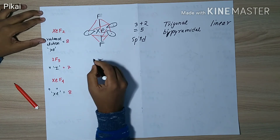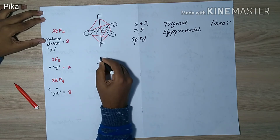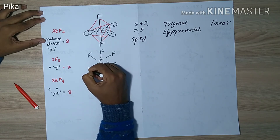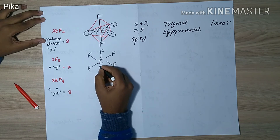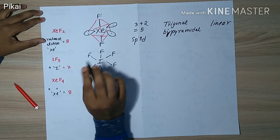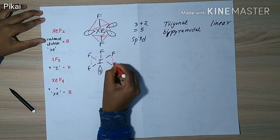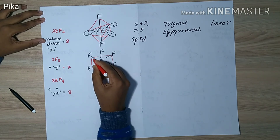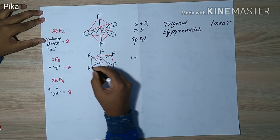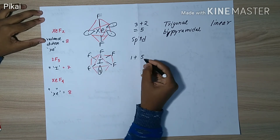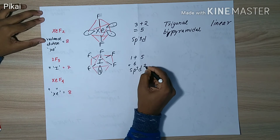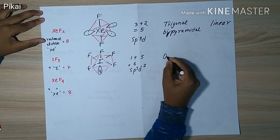For IF₅, iodine is the central atom with seven valence electrons. Iodine shares five electrons with fluorine atoms, and we are still left with two electrons, which form one lone pair. From the formula, one lone pair plus five bond pairs gives six.